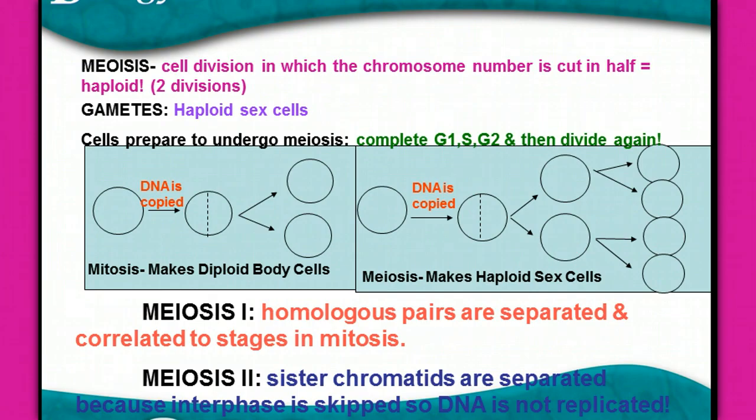Meiosis I is the first division. This is where the homologous pairs are separated, and it's just like mitosis — normal cell division: interphase, prophase, metaphase, anaphase, telophase, cytokinesis. The second division is when those sister chromatids are separated. Because interphase is skipped, DNA is not replicated, and that's what cuts the chromosome number in half.